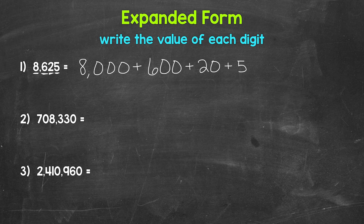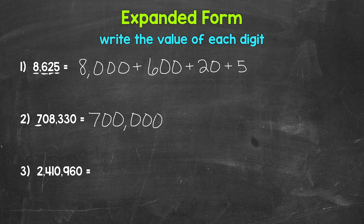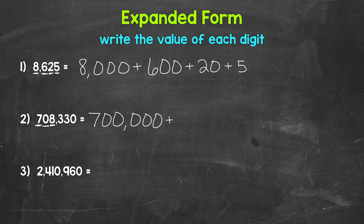Let's move on to number 2, where we have 708,330. We start with the digit furthest to the left — this 7. It's in the hundred thousands place, so the value of this 7 is 700,000. The next digit is a 0 in the ten thousands place. This 0 tells us the number doesn't have any ten thousands, so we don't have a value to write there. We move past that 0 to this 8 in the thousands place, which has a value of 8,000.